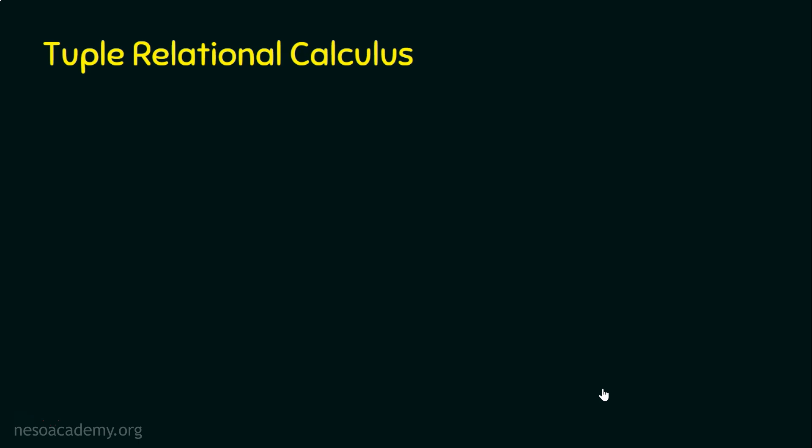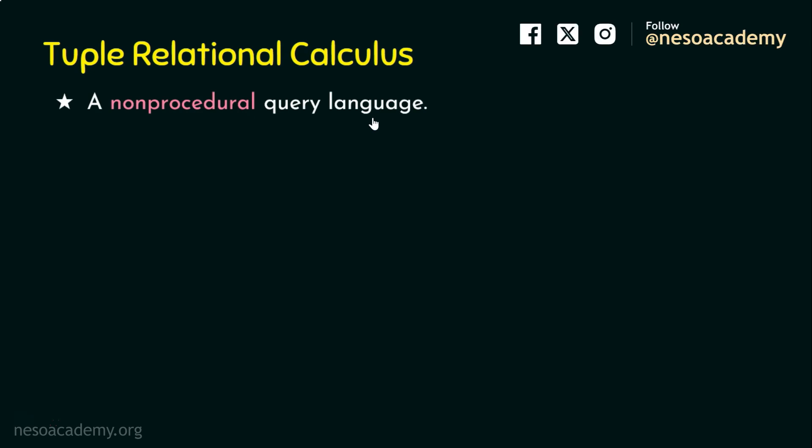Relational calculus, in contrast, is a non-procedural query language. It means if we want to get the desired information, we need not give the complete sequence of procedures in order to get that information. In simple terms, we can simply mention what is required — the system will take care of how it should be done. In relational algebra we need to explicitly mention what is required and how to get the data, but in relational calculus we mention only what is required.